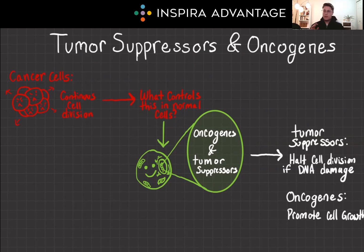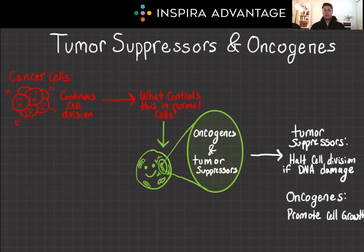This could be anywhere from one to six questions on the bio section, so we definitely want to make sure you understand these concepts. Let's start with the basics of cancer biology. Cancer, fundamentally, is a result of uncontrolled cell division. This process is typically regulated by tons and tons of genes, among which tumor suppressors and oncogenes are critical.